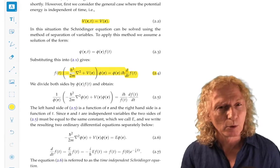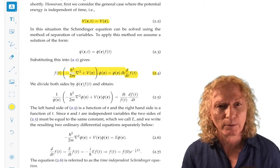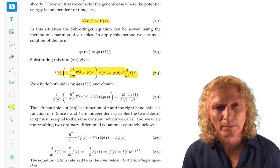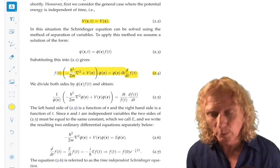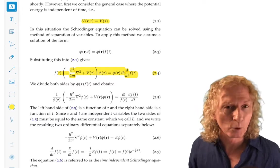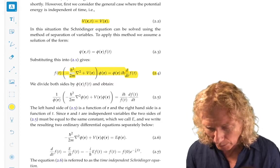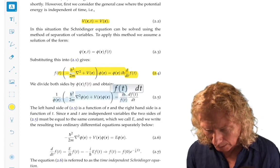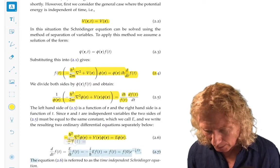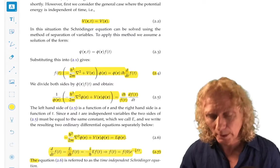And if those are going to be equal, some function of space equals some function of time, they have to be equal to the same constant. We're going to call that E, or energy, as we will see later on. So we set them both equal to E, and it separates into two equations.